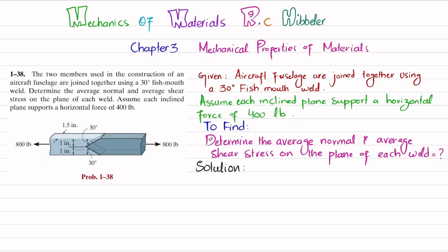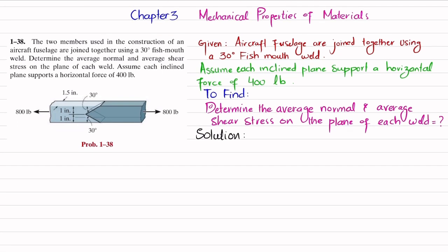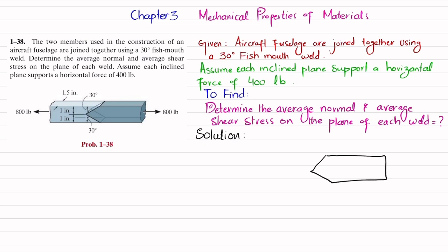The first step is to cut these two joints and draw the free body diagram. We can draw it in three dimensions. The inclined face is shown, and the force perpendicular to this face is the normal force N, while the force acting on this plane parallel to it is the shear force V. Our new coordinate axes are x-dash and y-dash.